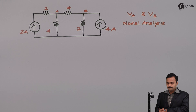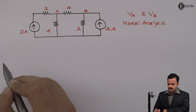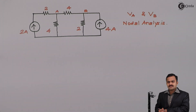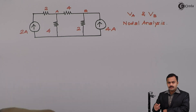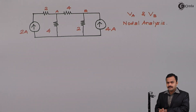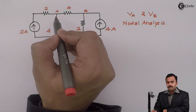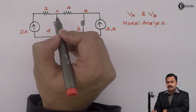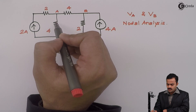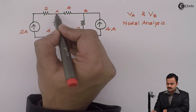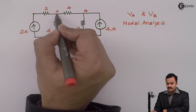So let's solve the problem. The first step to solve a problem using nodal analysis is to identify how many nodes are there. A node is a point where more than two branches are connected. Three branches are connected at this point, so this is node A.